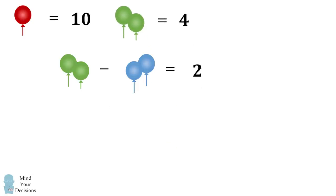We then have a pair of green balloons minus a pair of blue balloons equal to 2. Since the pair of green balloons is 4, we can then solve that the pair of blue balloons has to be equal to 2.